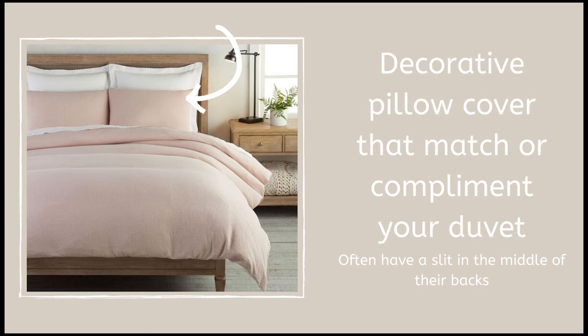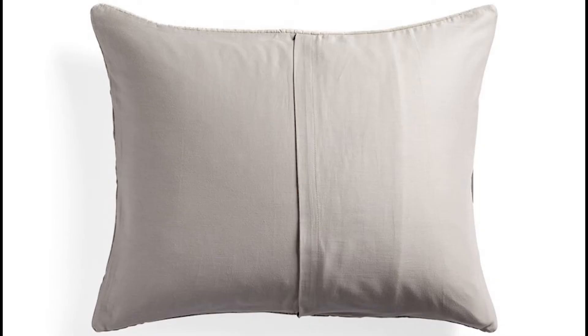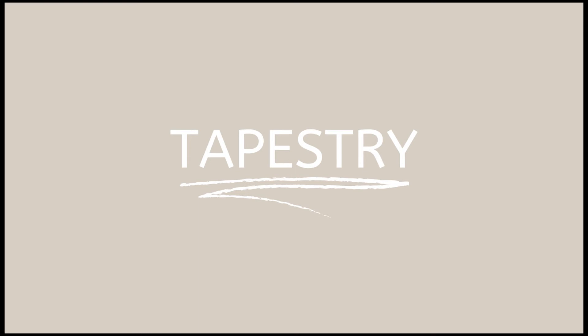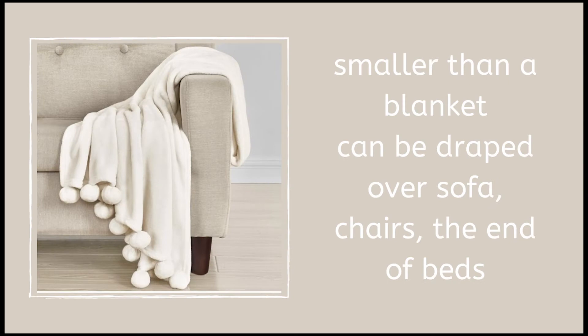Not to be confused with a pillowcase — a pillowcase is a plain cover with an opening at the end, whereas a sham has a slit in the middle of the back or sometimes openings on both sides. Tapestry is a decorative woven fabric art hung on the wall. A throw is smaller than a blanket and can be draped over sofas, chairs, or the end of beds.